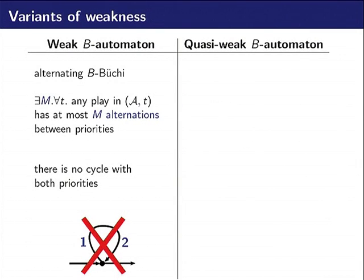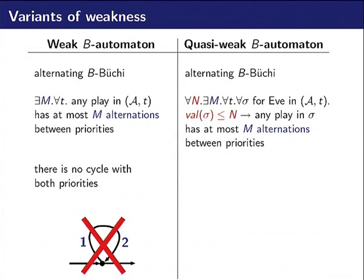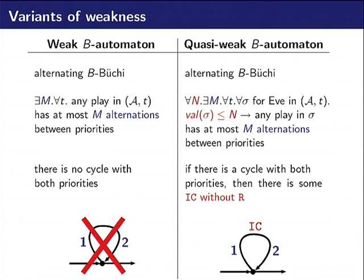So what are quasi-weak B automata? I remember that weak are alternating automata with a bound of the number of alternations between priorities, which is equivalent to the fact that there is no cycle with both one and two in the transition function. Here we are still alternating B-Büchi and we still want to bound the number of alternations, but now we are allowed to make this bound depend on the value of the function. So it means that if the cost function gets bigger, the bound is also allowed to get bigger.